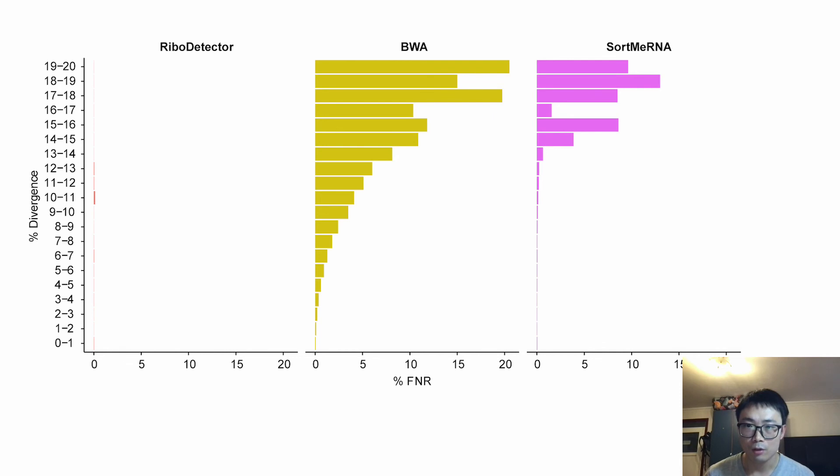RiboDetector also demonstrates remarkable generalizing ability for detecting novel ribosomal RNA sequences that are divergent to the training dataset.